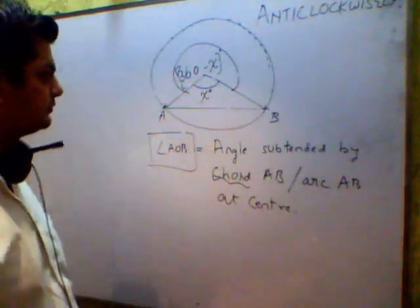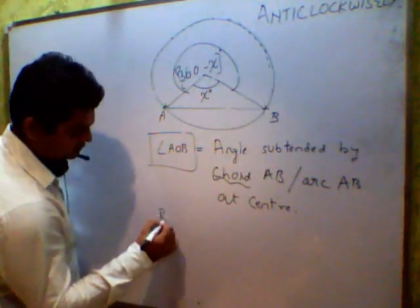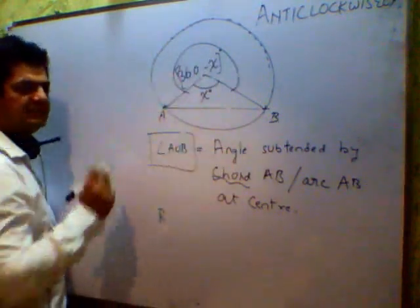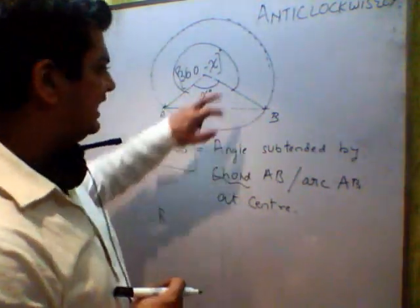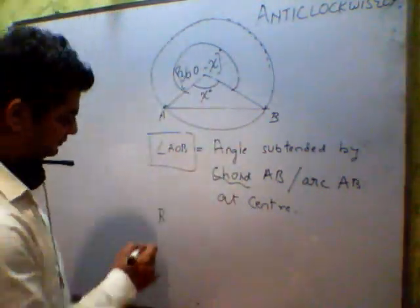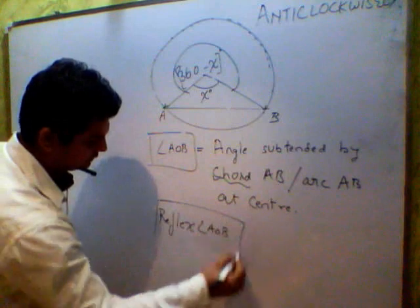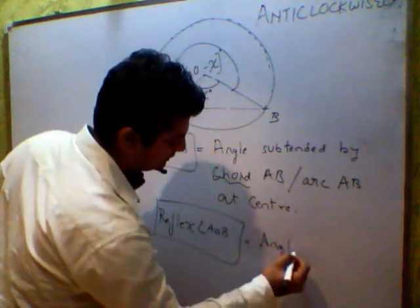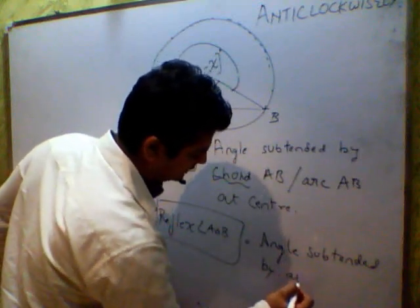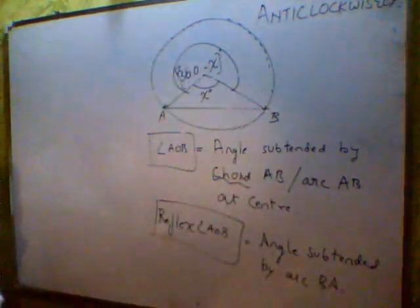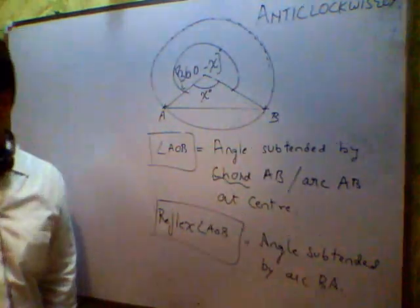Since this angle is more than 180 degrees, we call it the reflex of angle AOB. This is the angle subtended by arc BA at the center. I hope I am clear with my point so far — please copy it down by pausing the video.